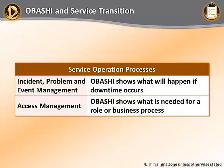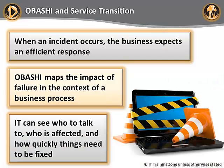The operational processes Obashi will benefit here include incident, problem, and event management, where Obashi helps to map data flows and can show what will happen if downtime occurs, and access management, where Obashi models can identify what is needed for a role or business process. When an incident occurs, the business expects IT to respond efficiently. Obashi diagrams allow the organization to see the impact of a failure in the context of the business process it supports. We can easily see who we need to talk to, who is affected, and how quickly things need to be fixed.